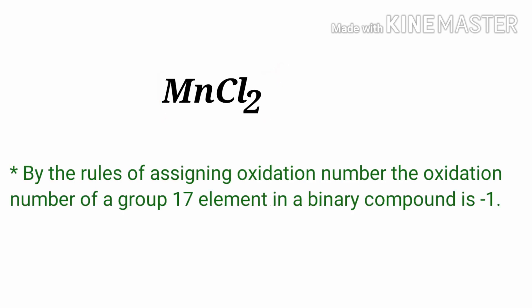By the rules of assigning oxidation number, the oxidation number of a group 17 element in a binary compound is minus one. Chlorine is a group 17 element, so the oxidation number of chlorine is minus one.